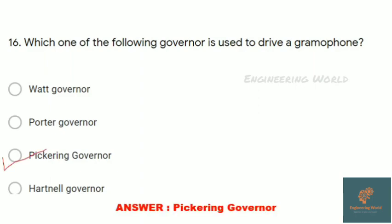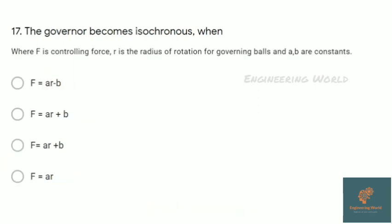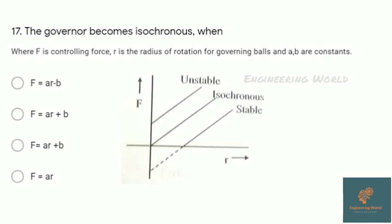Which governor is used to drive a gramophone? It's a Pickering governor. Next question: a governor becomes isochronous when, where F is controlling force, r is radius of rotation for governing balls, and a,b are constants. Here is the graph of F and r. The isochronous governor is when it intersects at the origin, that is F = ar. So the answer is F = ar.